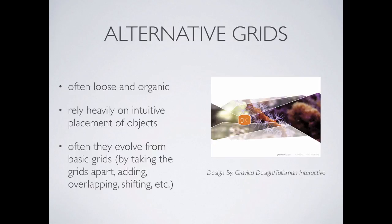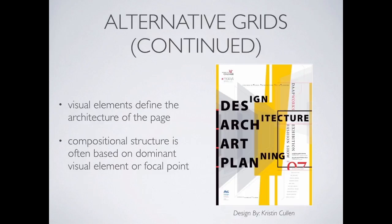Alternative grids tend to be loose and organic — they involve a lot more intuition. When you're placing elements you have to think: does that really work? Does it feel right? They can be very, very good — I've seen portfolios and posters use this strategy and end up awesome. But they can also fail miserably because they don't have the right hierarchy or layout and they're hard to read. This tends to be for the more advanced people to try. They often evolve from a basic grid where we take the grids apart and shift them. I would personally start with a grid and intentionally break it in a few key moments rather than creating something entirely from scratch.